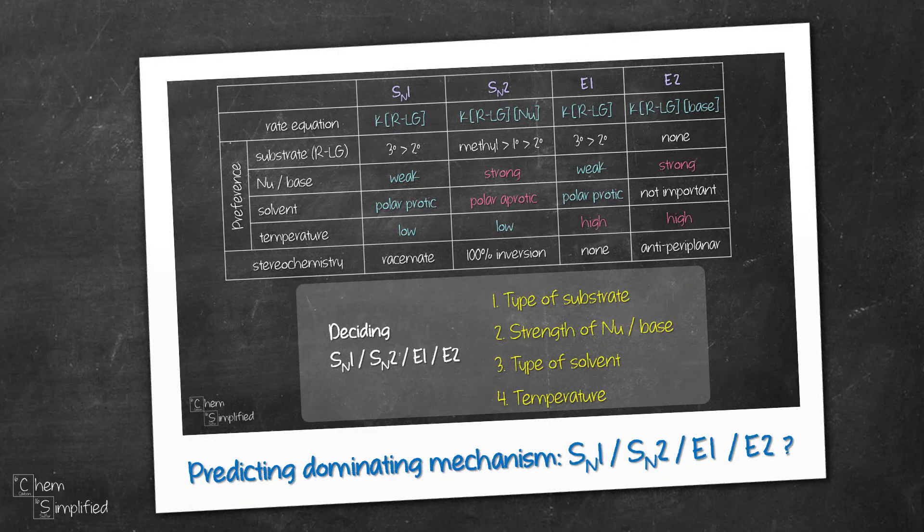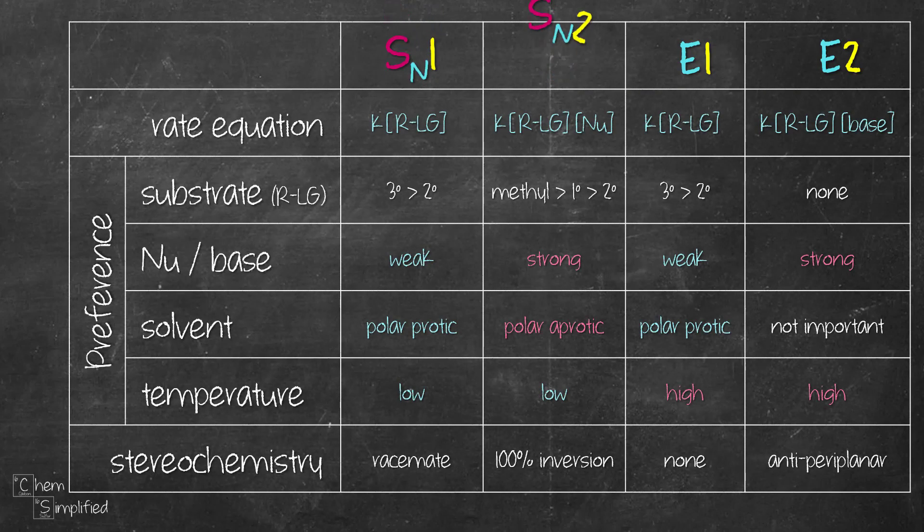In this video, we're going to predict the dominating mechanism based on three examples. Previously, I've released individual videos on SN1, SN2, E1 and E2 mechanisms. I've summarized all of their factors that favor each mechanism in this table and we're going to put this information to good use.